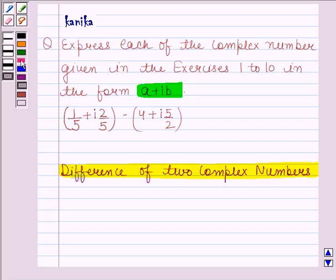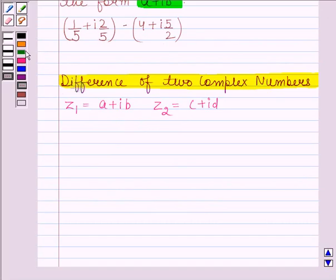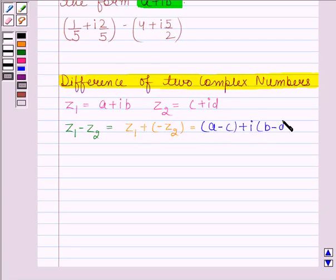then their difference, that is Z1 minus Z2, or we can say the addition of Z1 and minus Z2, is equal to (A - C) + i(B - D).